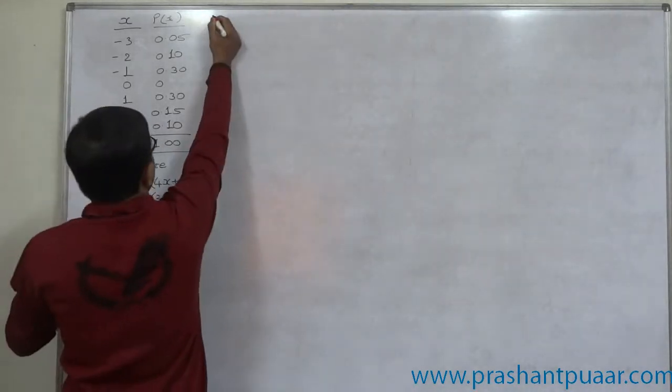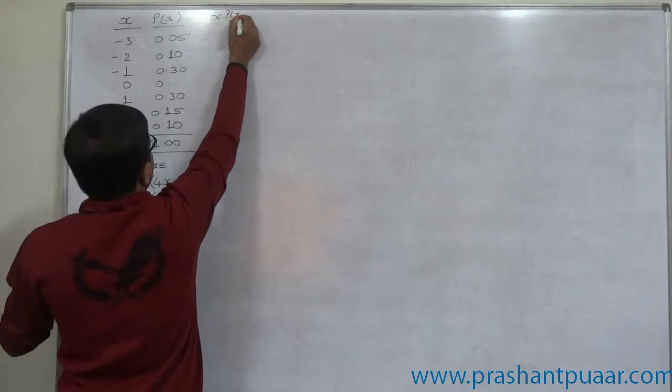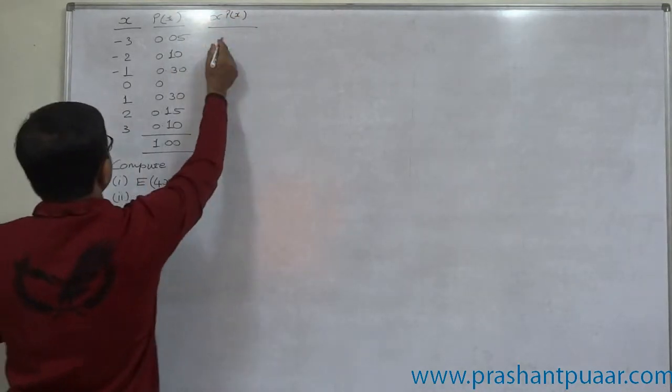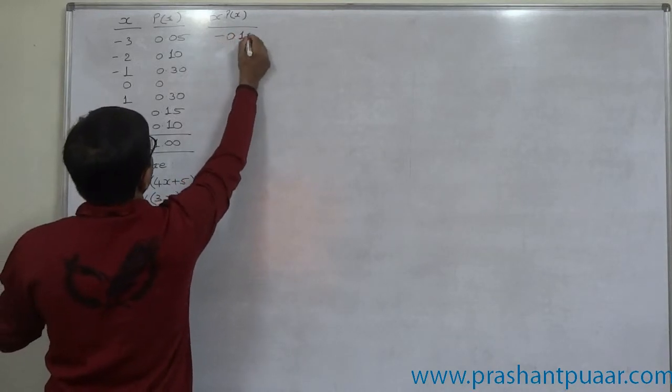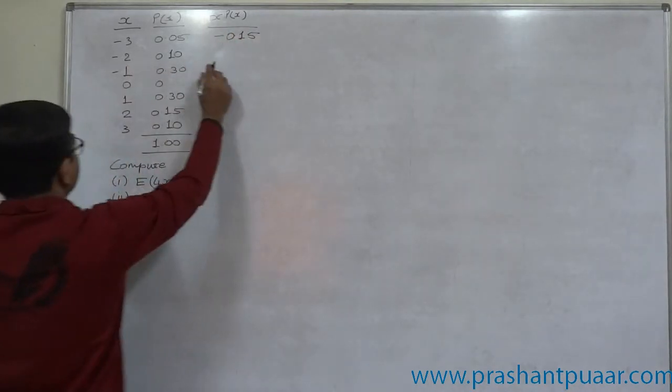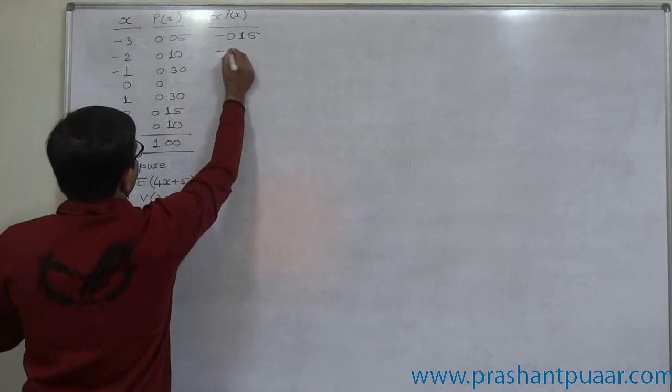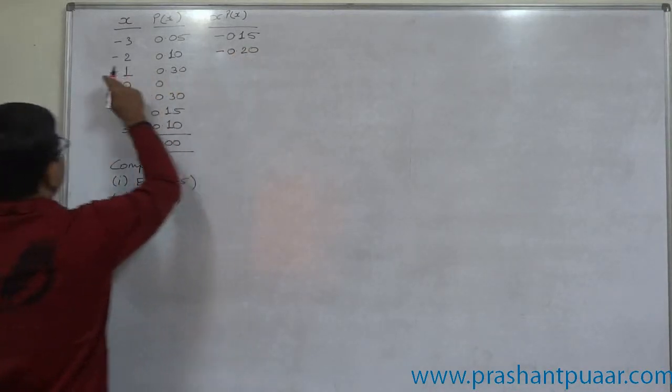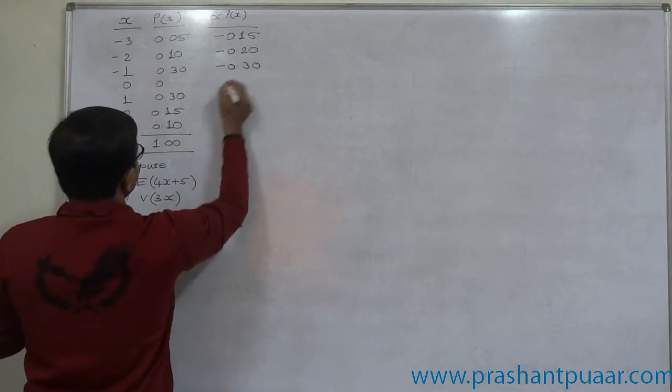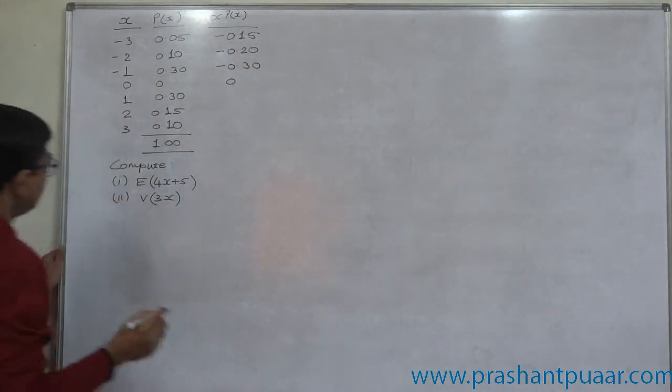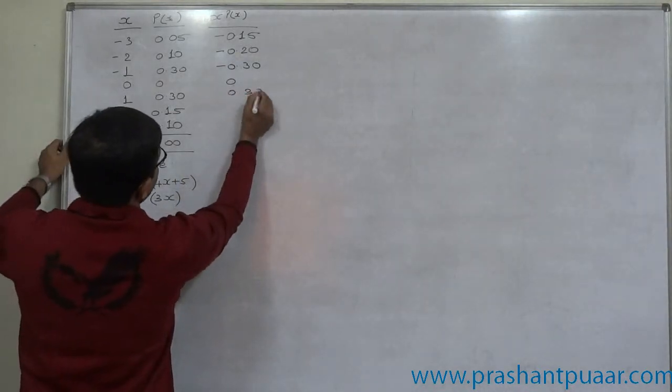And to get E of x, we need x into p of x. Minus 3 into 0.05 is minus 0.15. Minus 2 into 0.1 is minus 0.2. Minus 1 into 0.3 is minus 0.3. 0 into 0.1 is 0. 1 into 0.3 is 0.3.